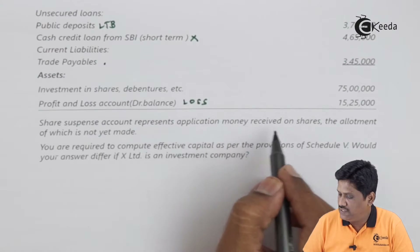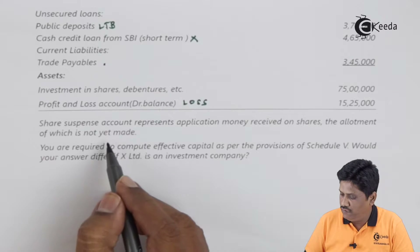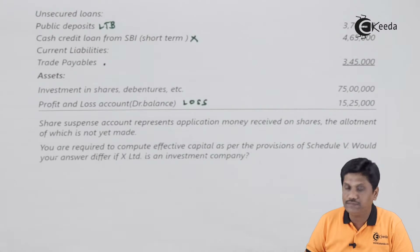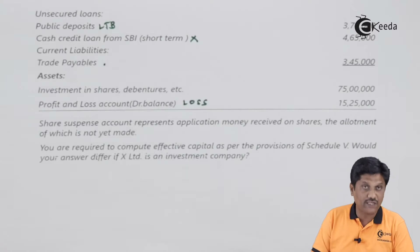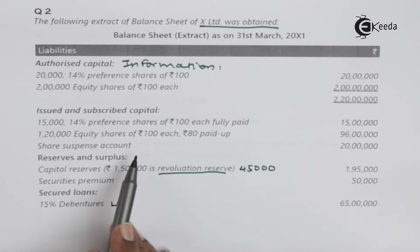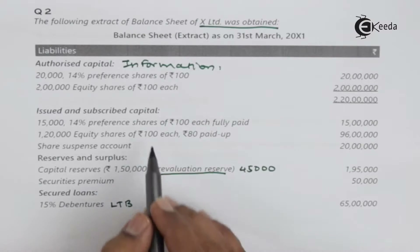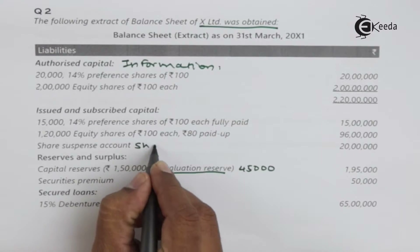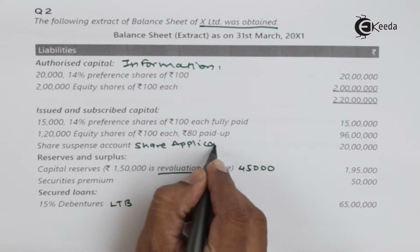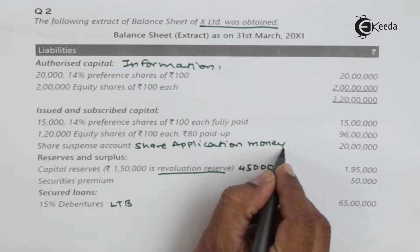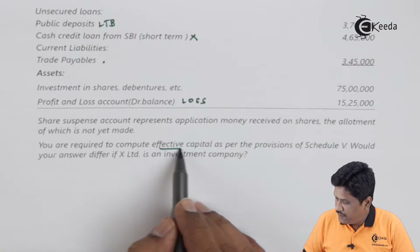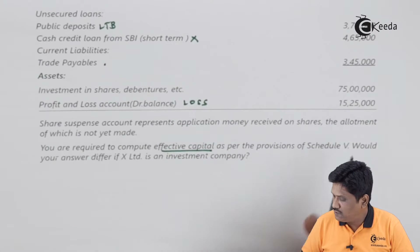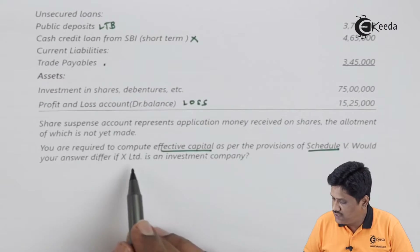Share suspense account represents the application money received on shares, the allotment of which has not yet been made. You are required to compute effective capital as per the provisions of Schedule 5. The question also asks whether your answer would differ if X Limited is an investment company.